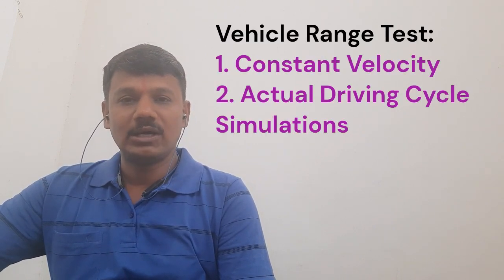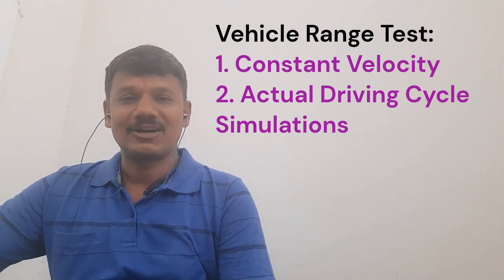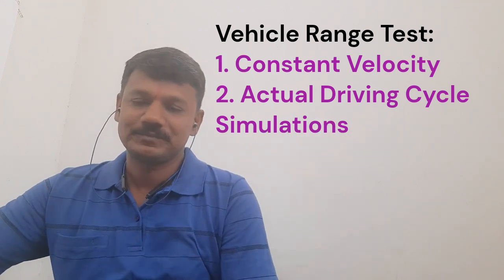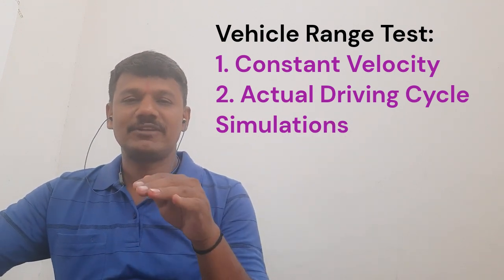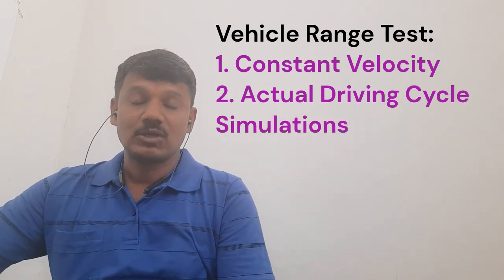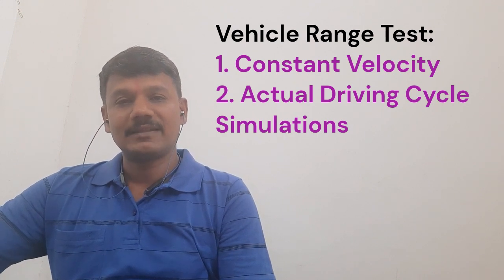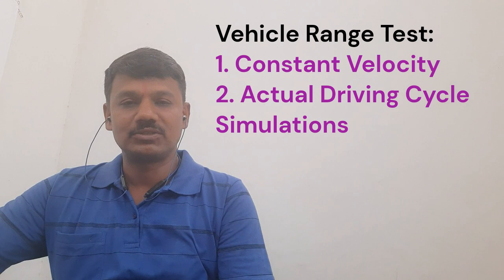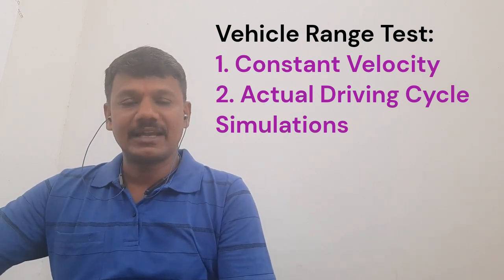For range identification — that is vehicle range calculation or vehicle range testing — two methods are used. One is constant velocity. However, in reality, constant velocity is not possible; the speed obviously changes based on time, traffic, and obstacles. The second test is complex and real, and that is based on simulation. There are fixed standard driving cycles based on where the vehicle manufacturer plans to launch their vehicle — urban area, between cities, or rural area — and standards exist for each.